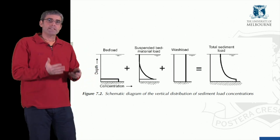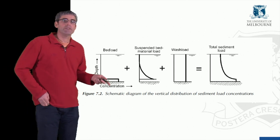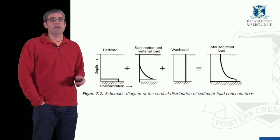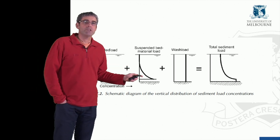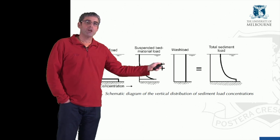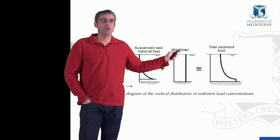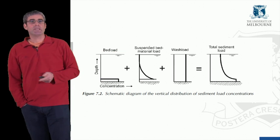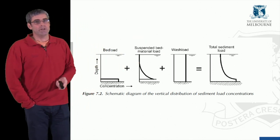If we think about how sediment concentration for these different modes of transport varies with depth within the water profile: the bed load is transported along the bed, so concentration is high right at the bed and zero above it. The suspended bed material load — sands or gravels — decreases in concentration as we move away from the bed. The wash load, much finer material such as silts and clays, is generally well mixed through the water column with a more uniform concentration distribution. Summing the bed load, suspended bed material load, and wash load gives the total suspended load.